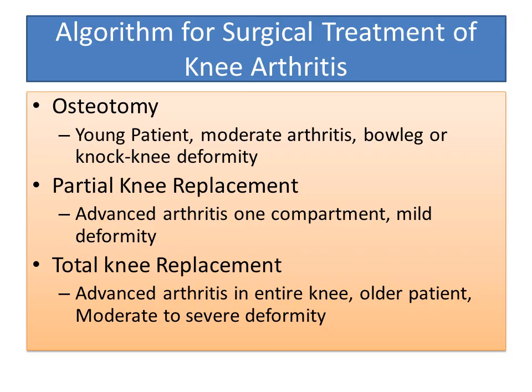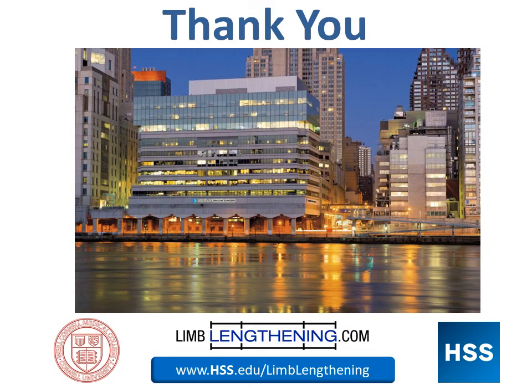In summary, osteotomy is indicated for the young patient with moderate arthritis and bow leg or knock knee deformity. It's a joint preservation technique and doesn't burn bridges for a future joint replacement. Partial knee replacement is a good technique for advanced arthritis in one compartment, but is only appropriate for mild deformity — you need to confirm the arthritis is localized. Total knee replacement is a very strong technique that treats advanced arthritis in the entire knee, best in the older patient, and can be used for moderate to severe deformity. I hope this review has been helpful. Thank you.